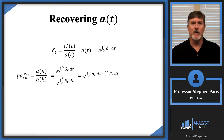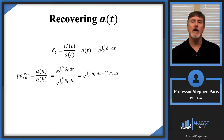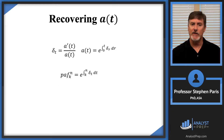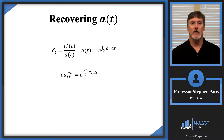The exponent is a difference of integrals. Think of these as areas under a curve: the first integral is the area from zero to N, and we subtract the area from zero to K. By properties of integrals, the result is the integral from K to N. So the periodic accumulation factor from K to N is e raised to the integral from K to N of delta_t dt. If I give you the force of interest, you use this to get the periodic accumulation factors from K to N.